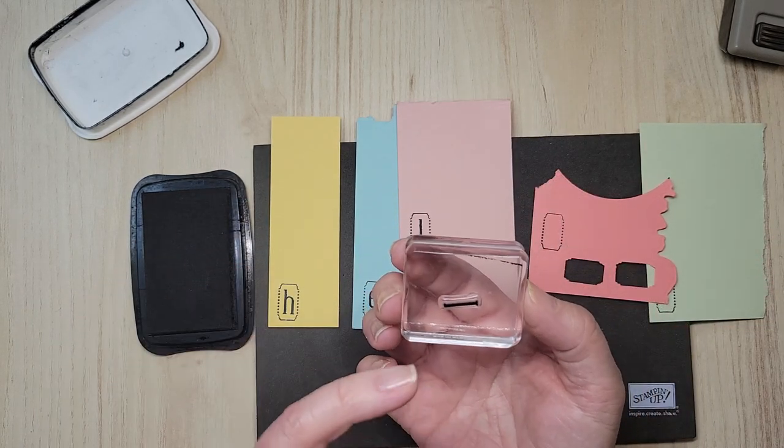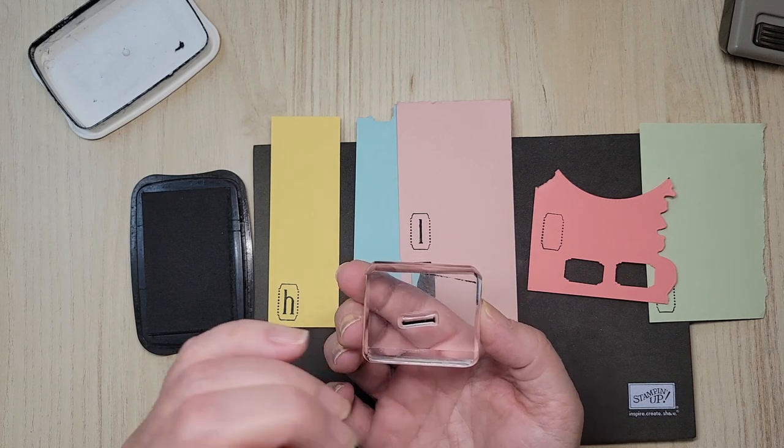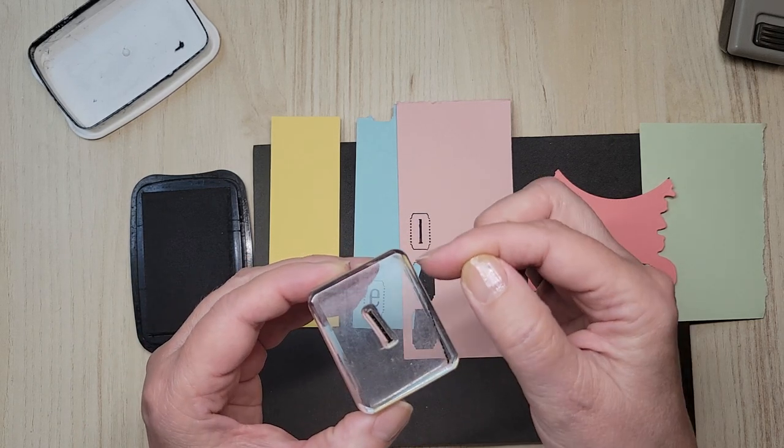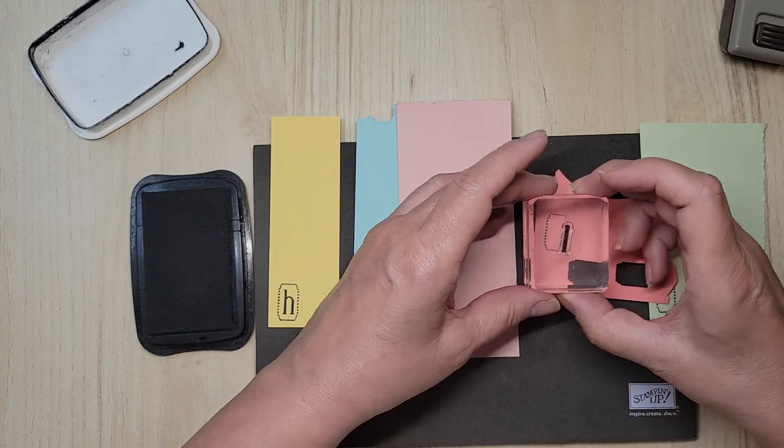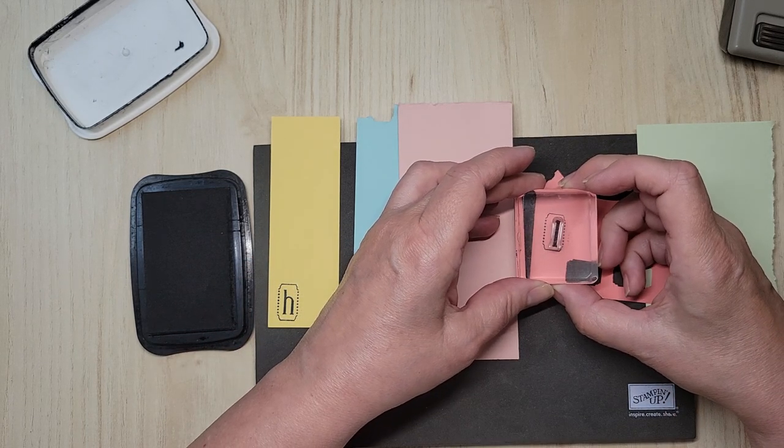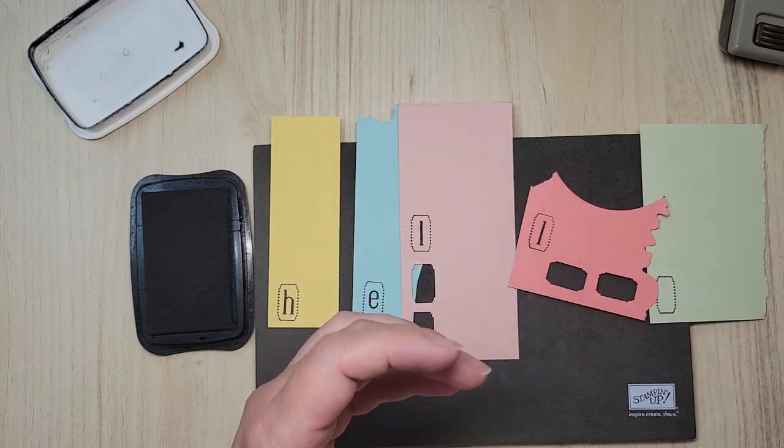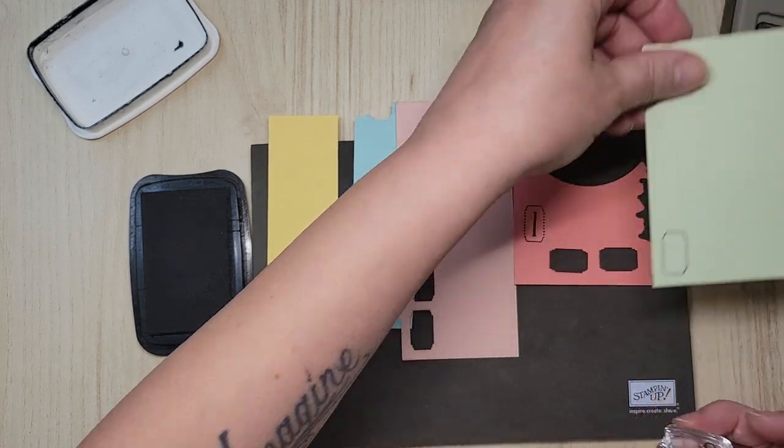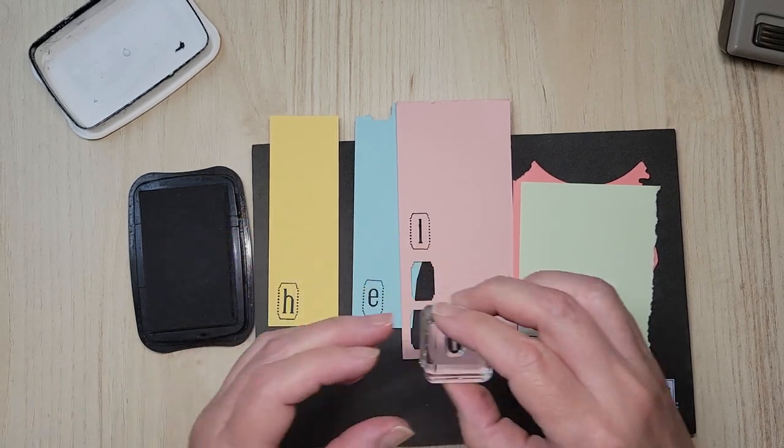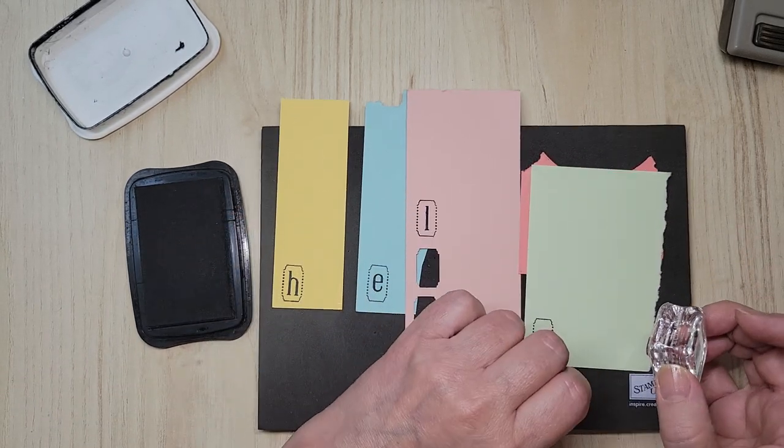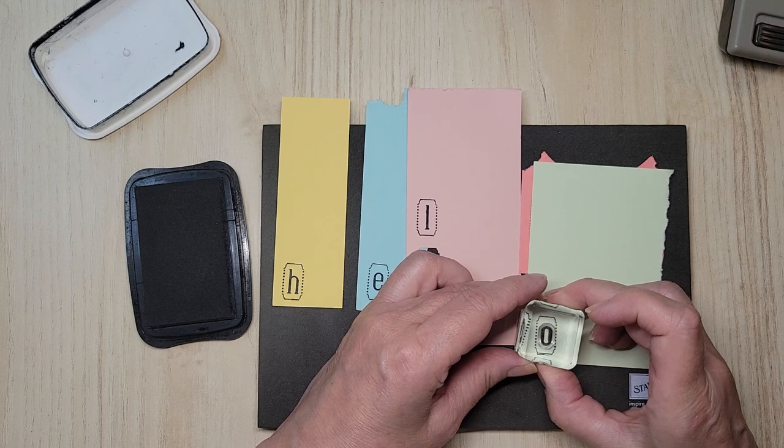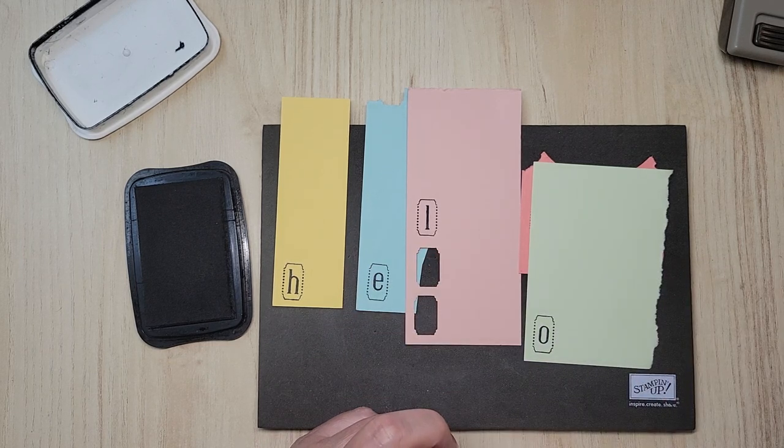If you notice here, this is what I mean about using the appropriate size block. I've actually got ink down the side here. Now we're not stamping the whole page.